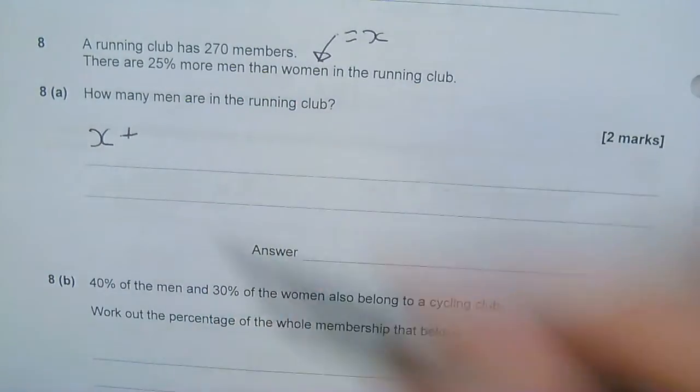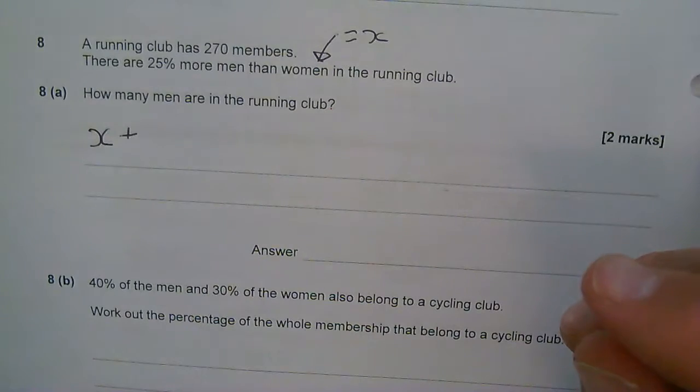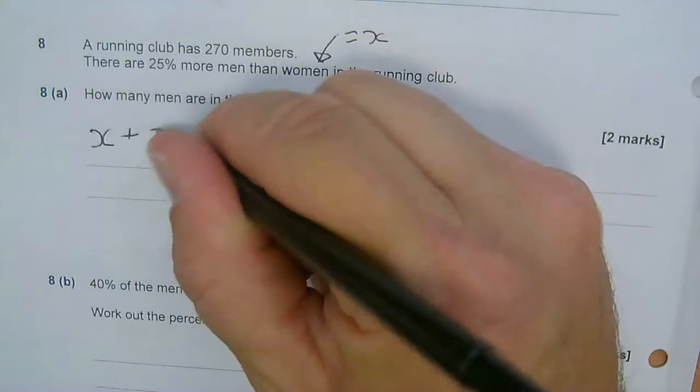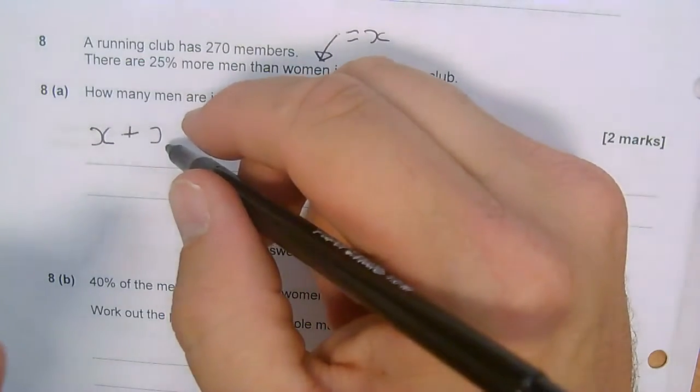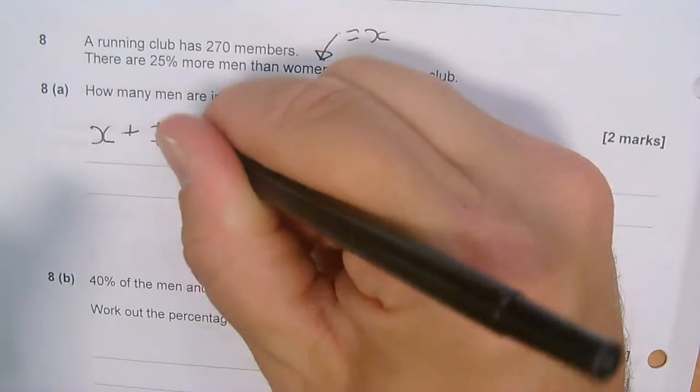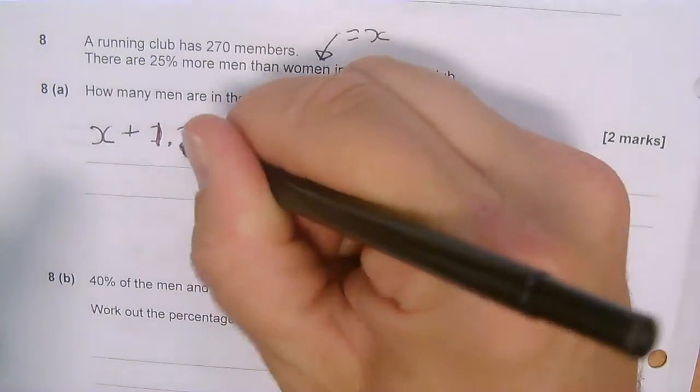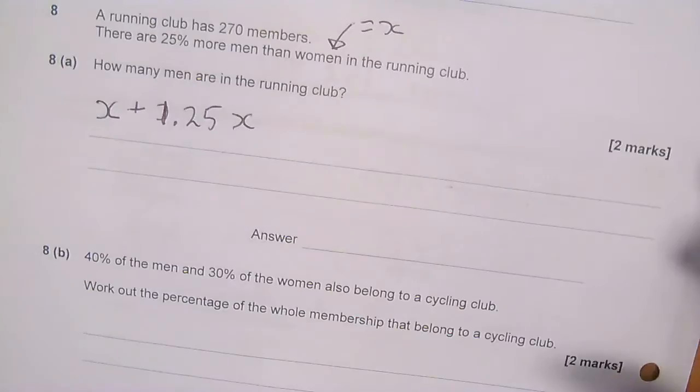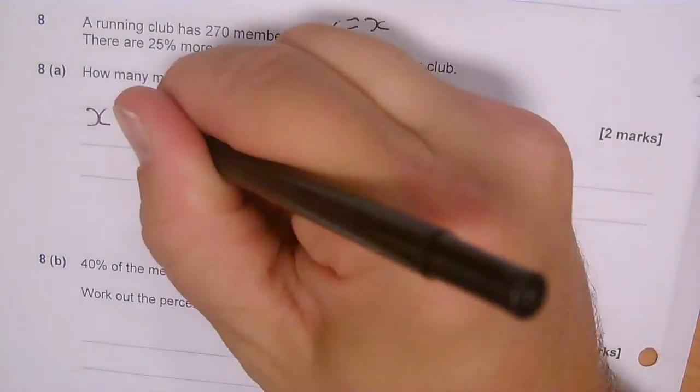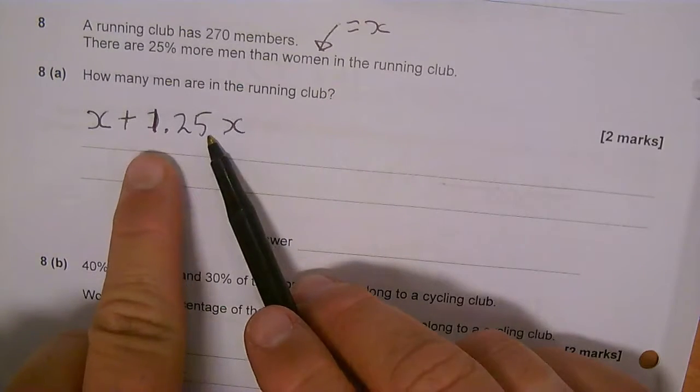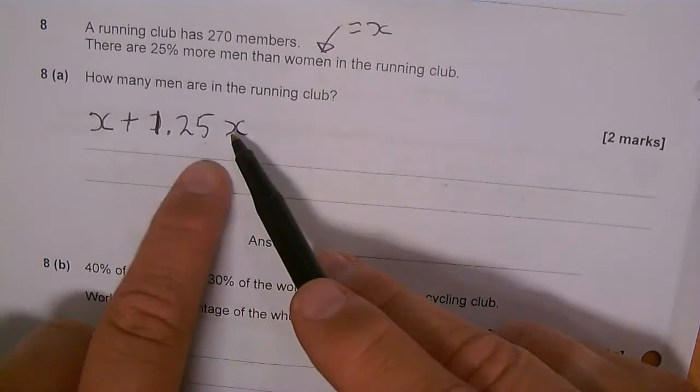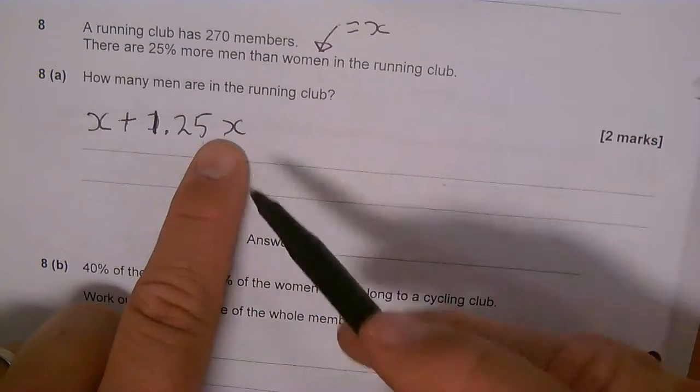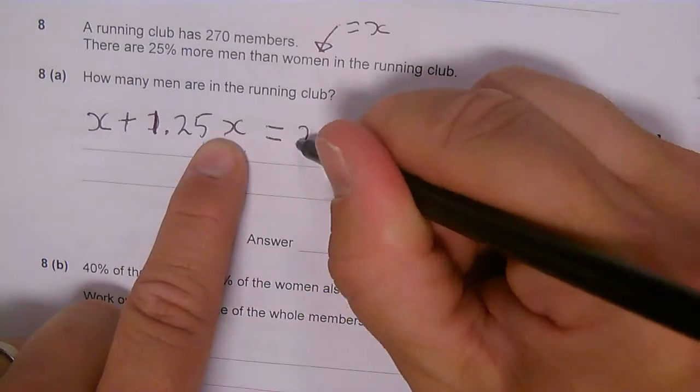Now I've got 25% more men. So what have I got here? If it's 25% more men, then I have 1.25 lots of x for my men. So I've got that many women and 25% more than the number of women. That would be a multiplier of 1.25 times my number of women. That gives me my number of men, and all that comes to 270 members.